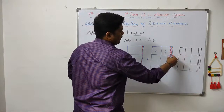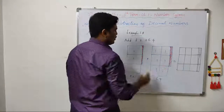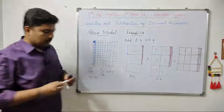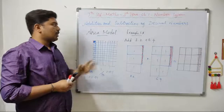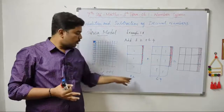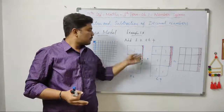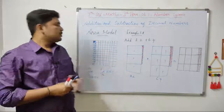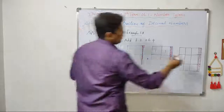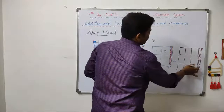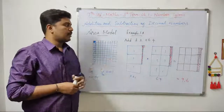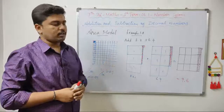This is the area model result. If you have 0.21, you can use this square. It is very easy to get the square using the area model. Counting the result: 1, 2, 3, 4, 5, 6, 7, 8, 9 — and the decimal gives 9.6. So the answer is 9.6. This is how you use the area model for Example 1.8 to add decimal numbers.